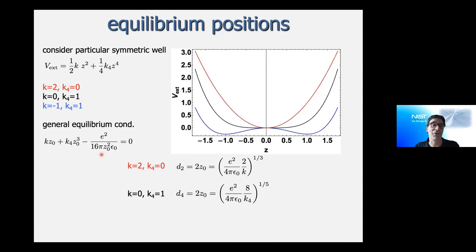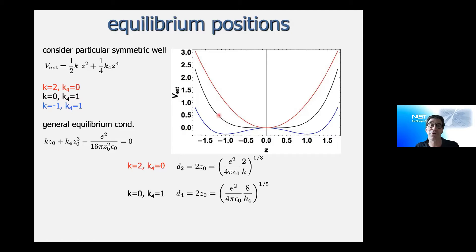The equilibrium condition is not easy to solve in general since the equilibrium distance appears in different powers, including 1/r² for the Coulomb interaction. Unless one coefficient is zero, you get the familiar equilibrium distance for ions in a harmonic well, seen often in the literature. For the quartic case you get a distance scaling to the 1/5 power — ions must move further apart to reach the walls and get an equivalent restoring force. In the double-well they move even further apart until their interaction becomes negligible.